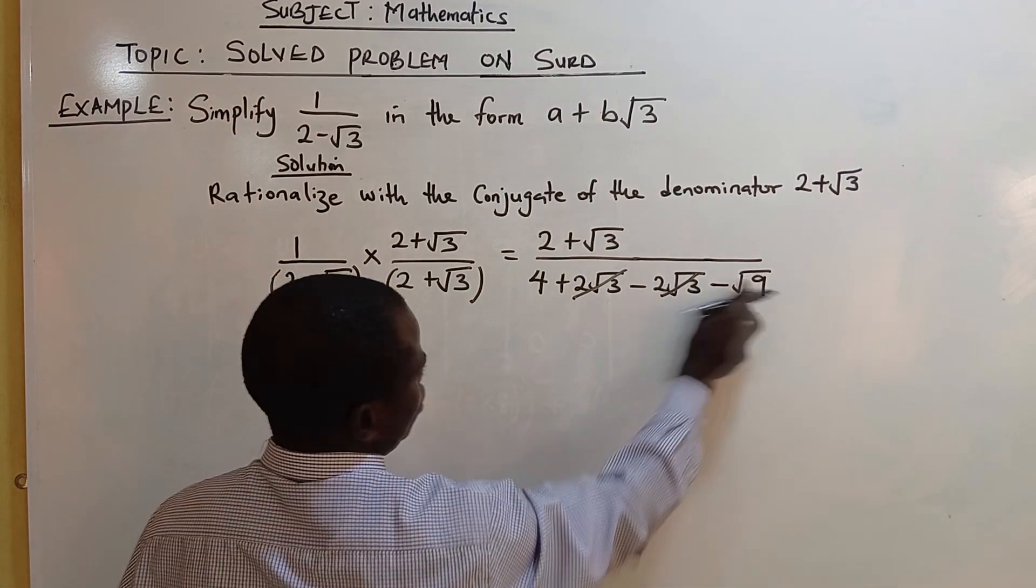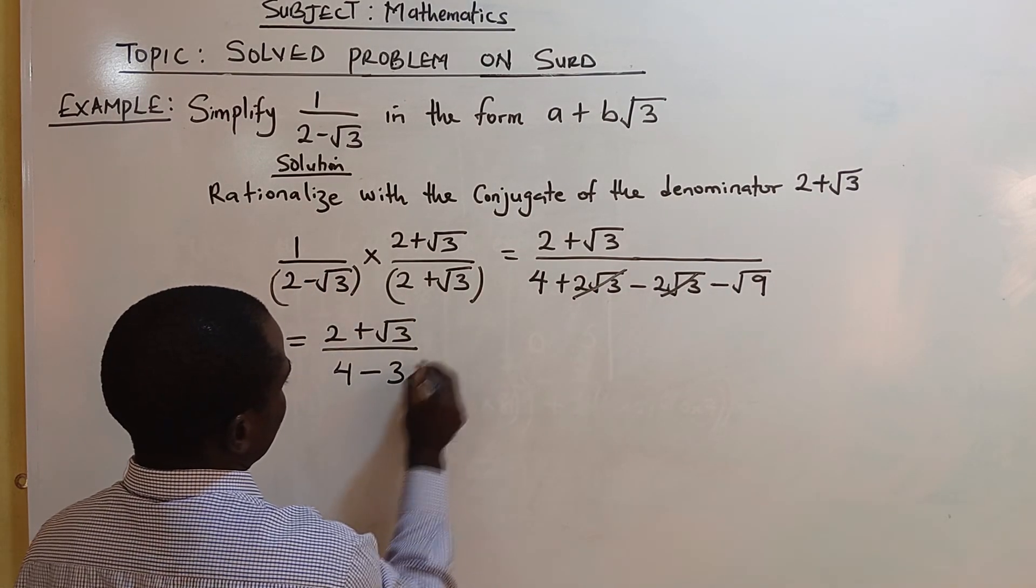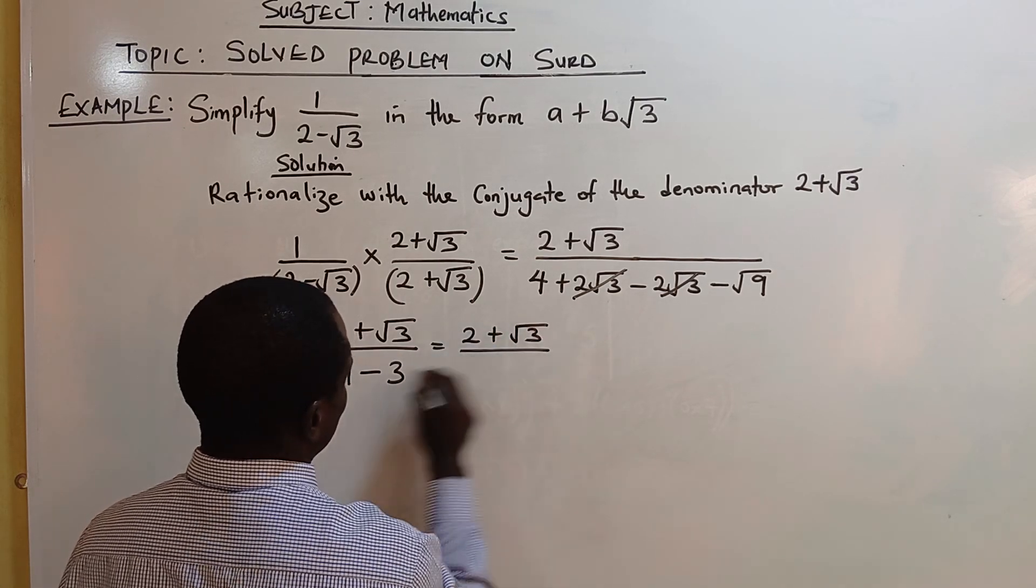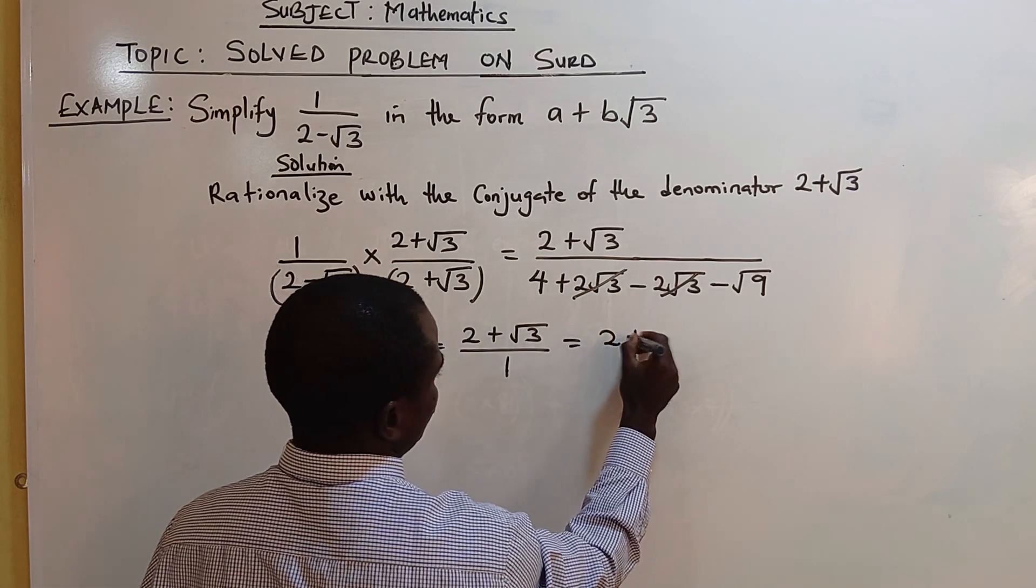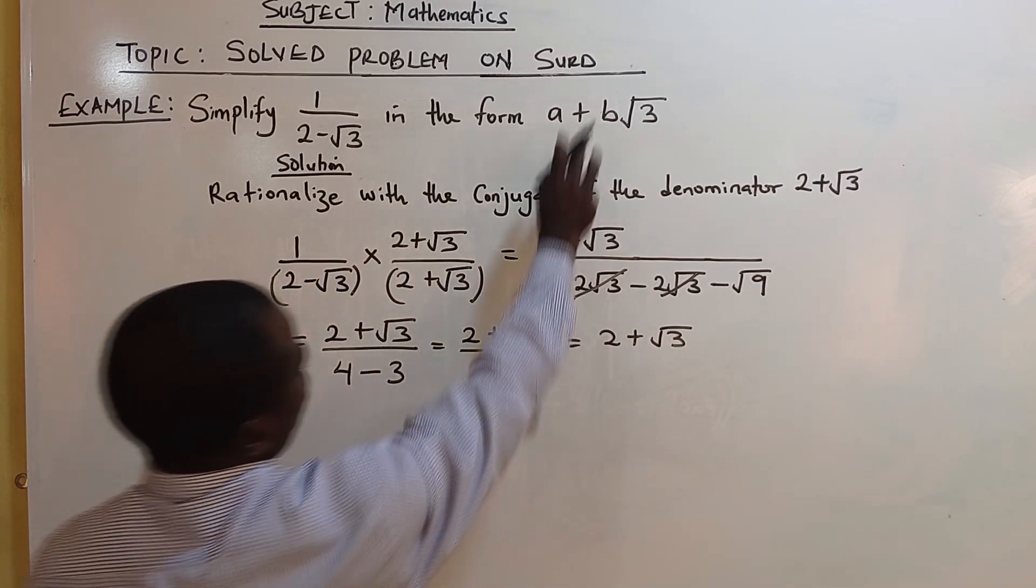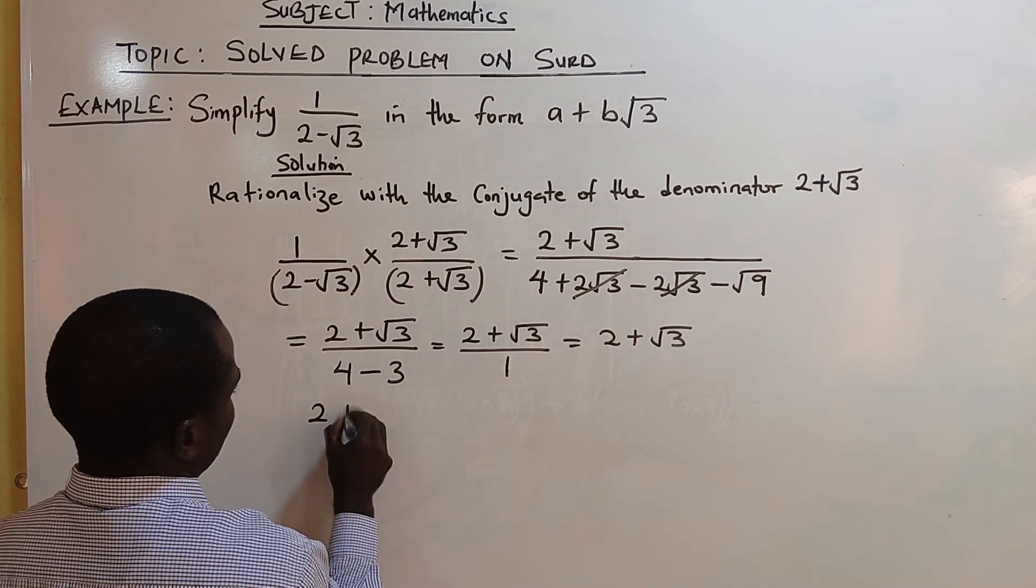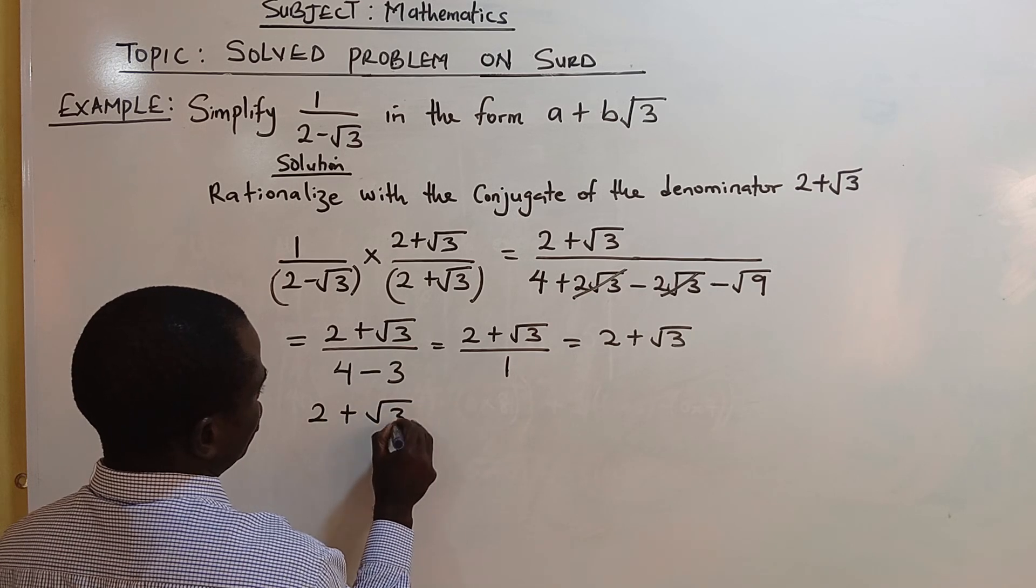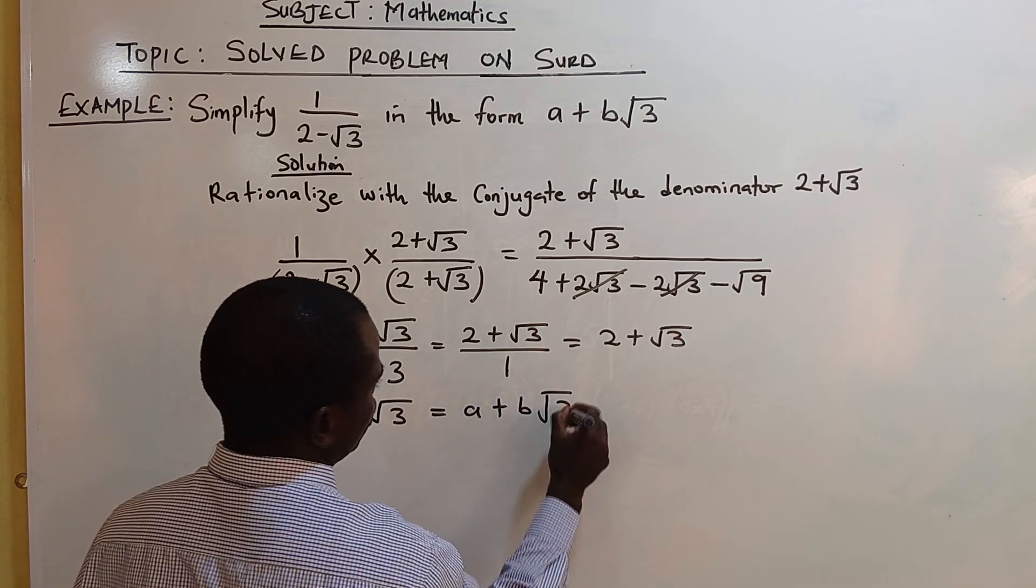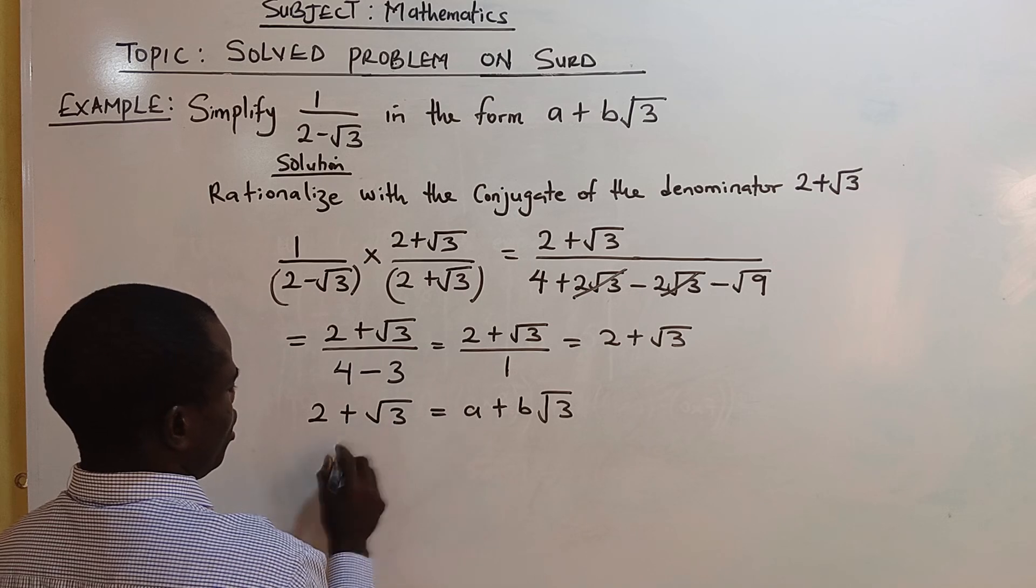Root 3 squared is 1, which gives 2 plus root 3. When you relate it to the form a plus b root 3, in that case a equals 2.